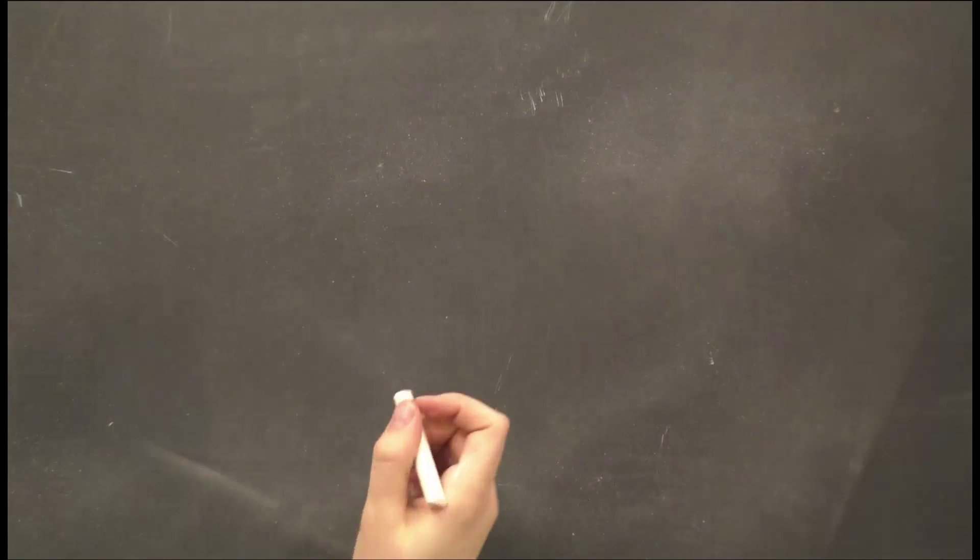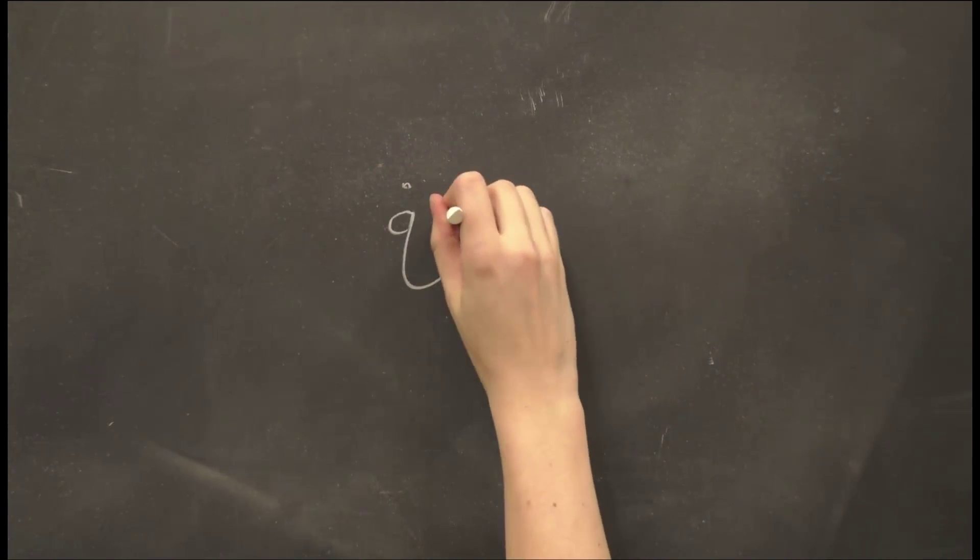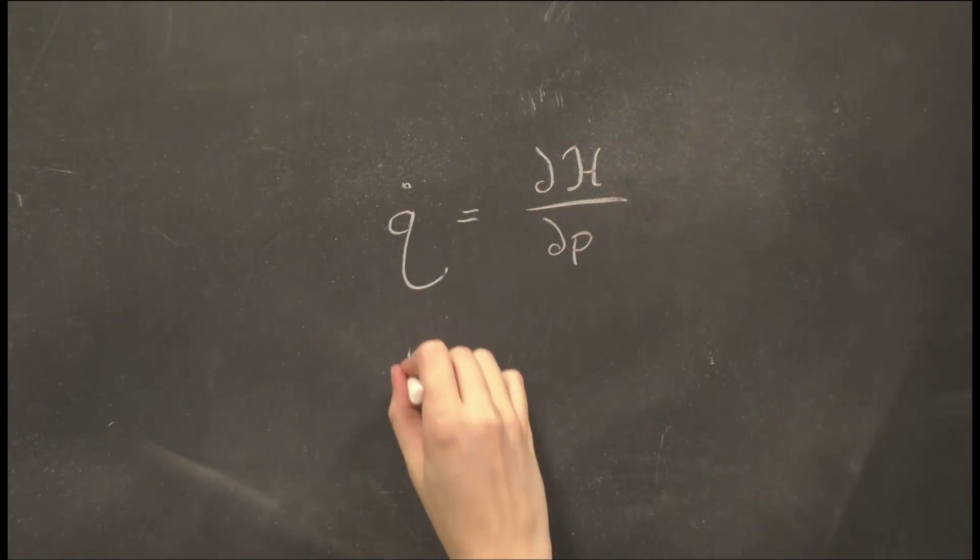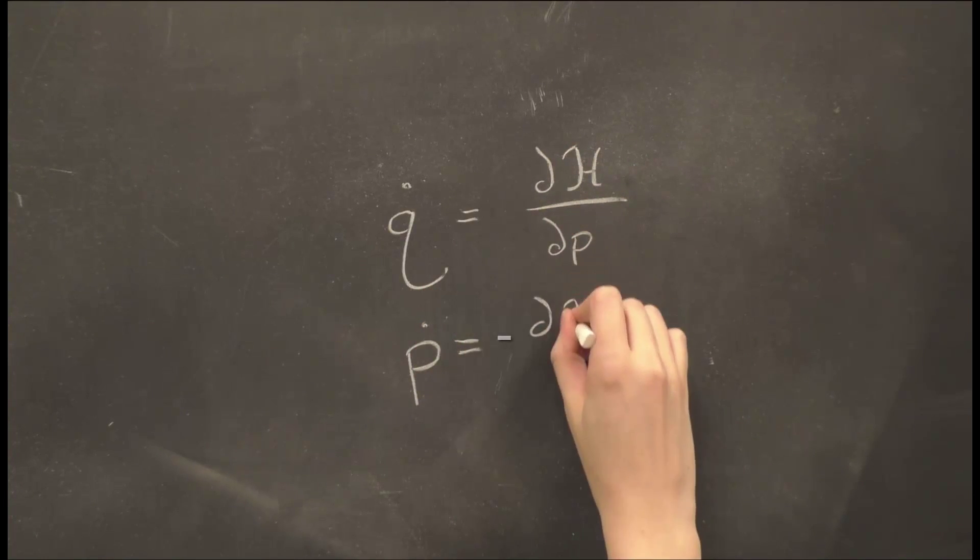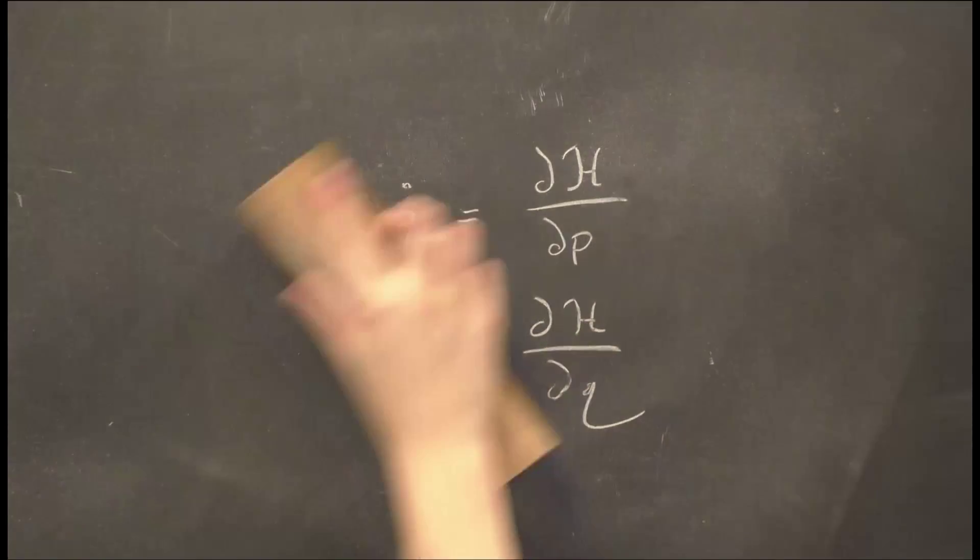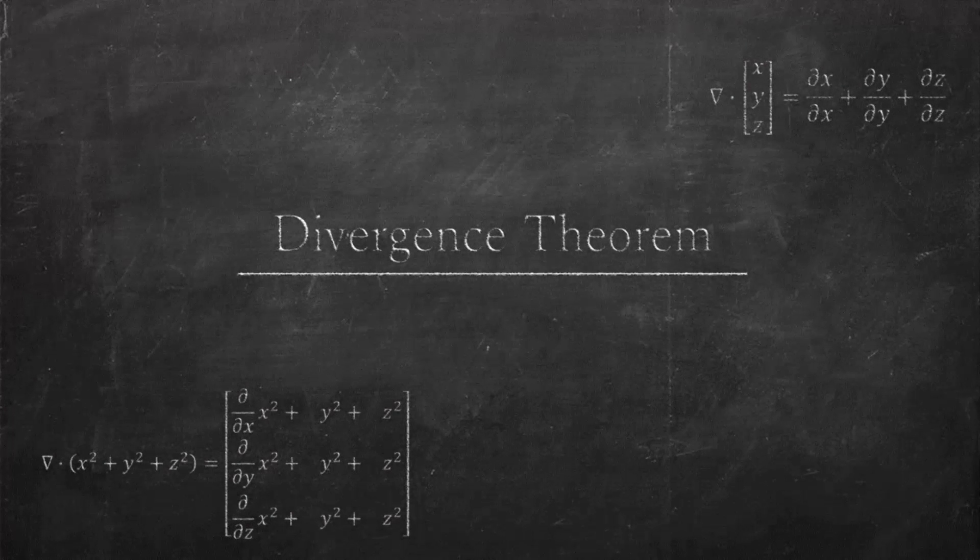The equations of motion in Hamiltonian mechanics are given by Q dot equals dH dP and P dot equals negative dH dQ. Hamiltonian mechanics gives two first order differential equations, where Lagrangian gives one second order equation. Bearing this in mind for later, we move on to the second piece of math we need, the divergence theorem.